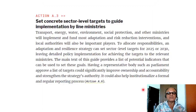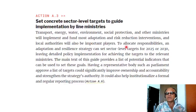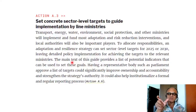Action item A.3: set concrete sector-level targets to guide implementation by line ministries — agriculture, forestry, water, infrastructure, environment, transport, energy, social protection, and others — which will implement and fund most adaptation and risk reduction interventions. Local authorities will also be important players. An adaptation and resilience strategy can set sector-level targets for 2025 or 2030, leaving detailed policy implementations to the relevant ministries.